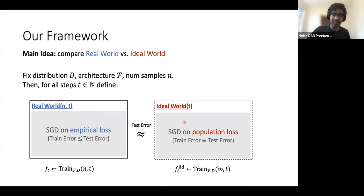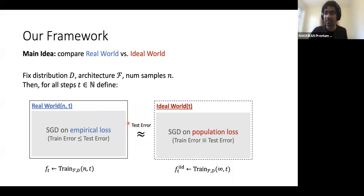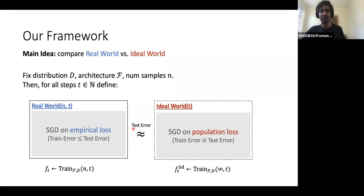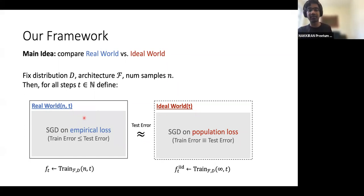These two objects are certainly very different — there's a clear distinction between one-pass SGD and multi-pass SGD. But our main claim is that the model produced by both worlds has very similar, almost identical, test error, provided you run both worlds for the same number of steps.